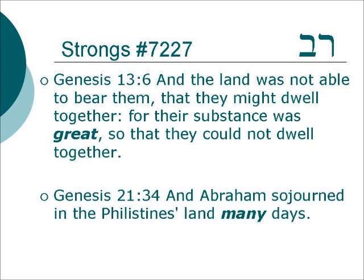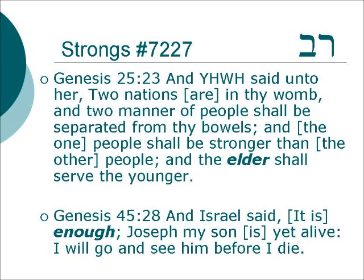Genesis 21:34 — And Abraham sojourned in the Philistine's land many days. Genesis 25:23 — And Yahweh said unto her, Two nations are in thy womb, and two manner of people shall be separated from thy bowels, and the one people shall be stronger than the other people, and the elder shall serve the younger. It's a little different meaning, but the idea is that he is more — he is older, more in years. Genesis 45:28 — And Israel said, It is enough, Joseph my son is yet alive, I will go and see him before I die. We don't take this concept of enough as meaning finished — it just means it's many; the whole information given to Israel is a lot for him.